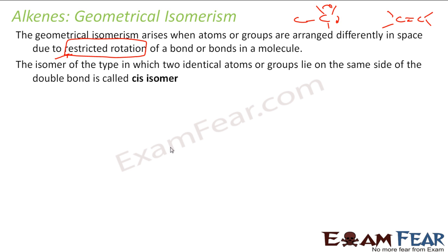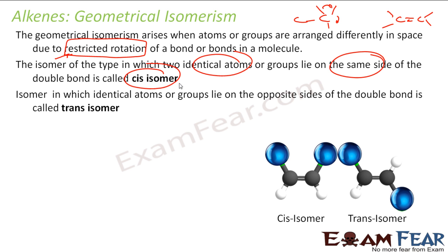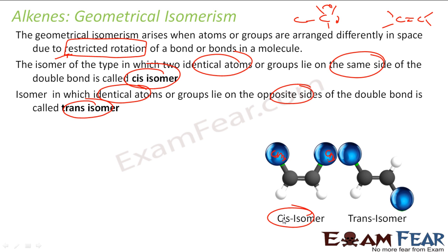The isomers in which two identical atoms are on the same side are called cis-isomers. The ones in which identical atoms lie on the opposite side are called trans-isomers. For example, if both CH3 groups are on the same side and both hydrogens on the same side, they are called cis-isomers. If the CH3 groups are on different sides and hydrogens on different sides, they are called trans-isomers.